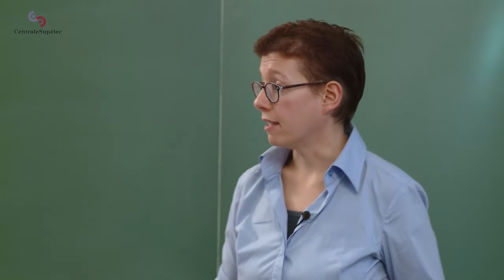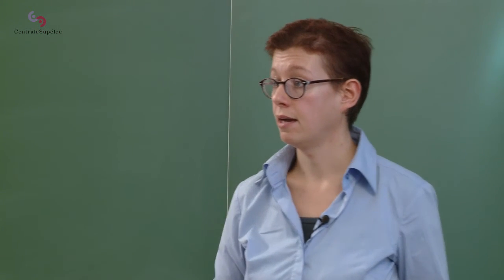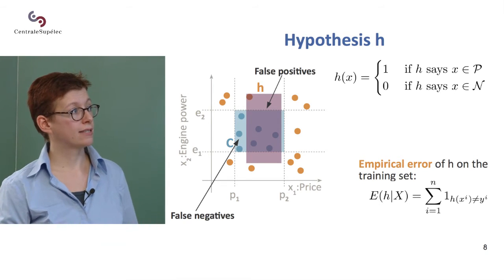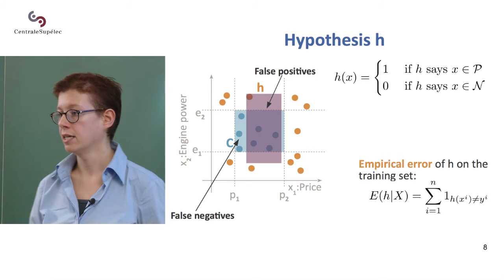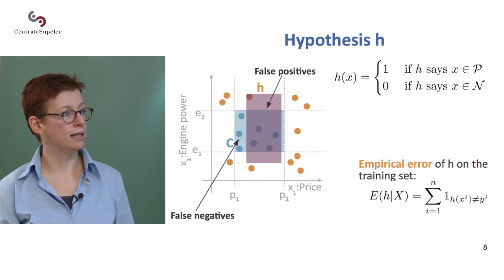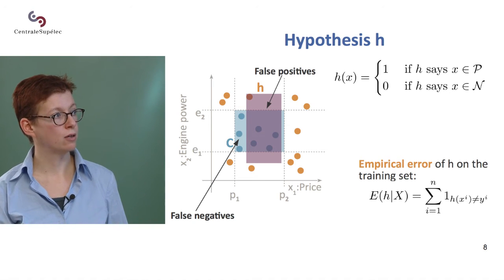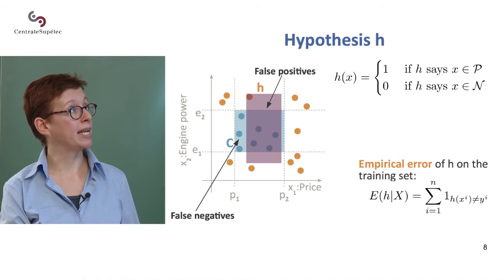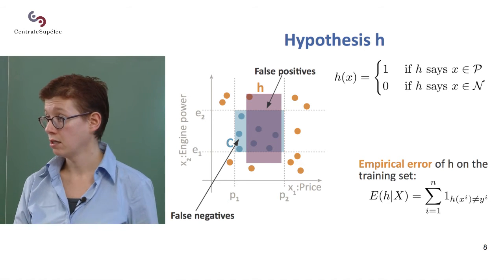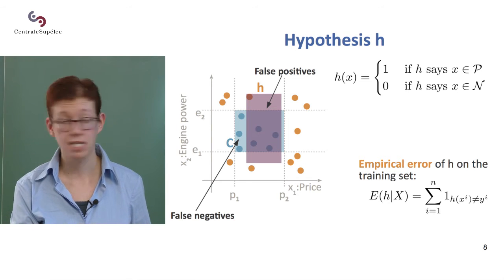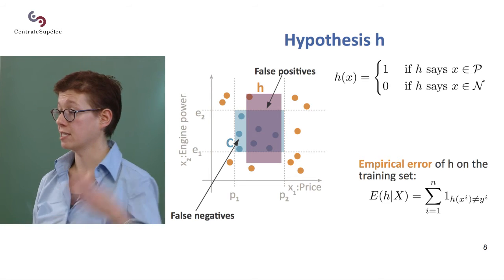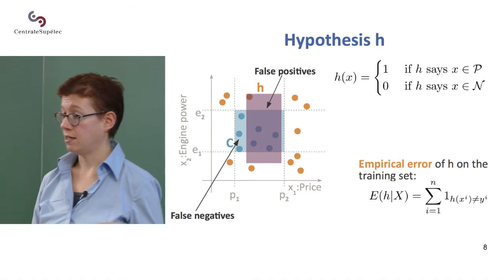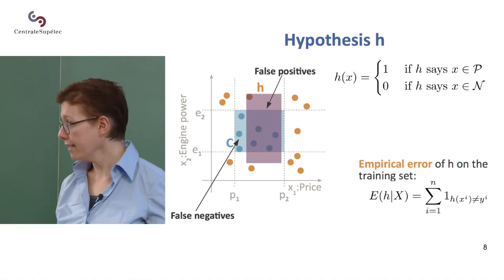I'm making errors wherever H and C don't match. The empirical error on the training set is defined by the number of points that are in H but not in C, or conversely. This notation is an indicator function — it's one if H(X^i) is different from Y^i. So H(X^i) is my prediction for X^i, and Y^i is my true value. It's zero if they are the same values, because I'm not making an error.